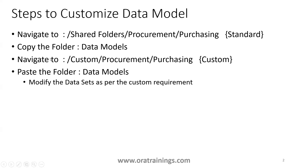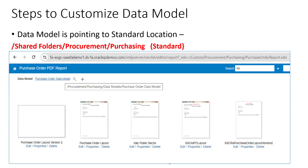Once you perform the copy of the data models folder, navigate to the custom location — similar to what you have in the standard location but instead of shared folders, you'll have custom, then custom procurement purchasing. Paste this data models folder into the custom procurement purchasing location, and then modify the data set in the data model as per your custom requirement.